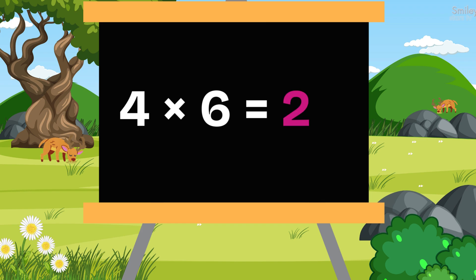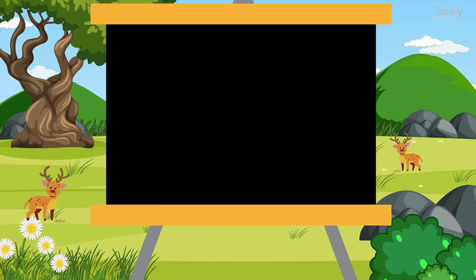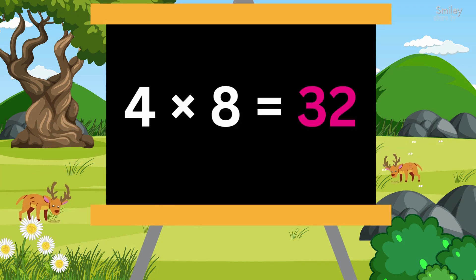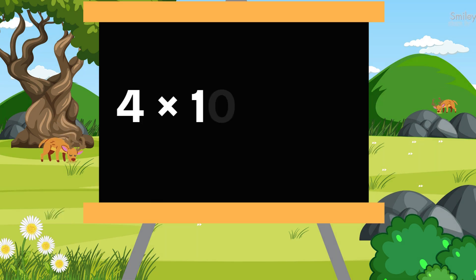four sixes are twenty-four, we're learning plenty. Four sevens are twenty-eight, four eights are thirty-two. Four nines are thirty-six, let's keep counting two.